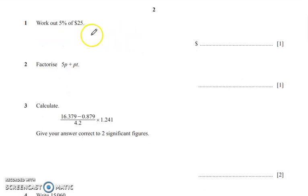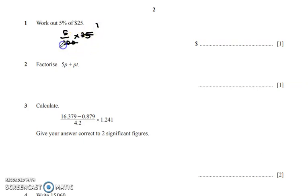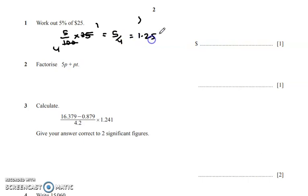Starting with the first question: work out 5% of $25. So 5% means 5 upon 100 into 25. We can cancel 25 into 1 and 25 into 4, giving us 5 upon 4. Dividing this gives 1.25, so the answer is $1.25.